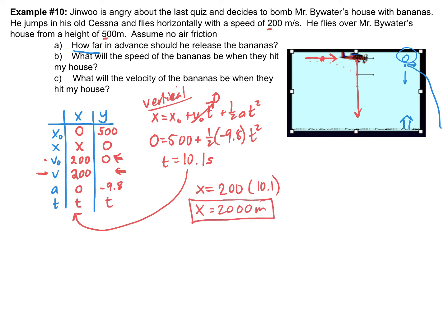That might be surprising — that's two kilometers. You need to drop it two kilometers in advance, but that's because he's going so fast at 200 meters per second. That's pretty fast even for an airplane, so he needs to drop those bananas significantly ahead of the house if he wants to actually hit it.